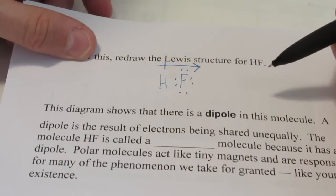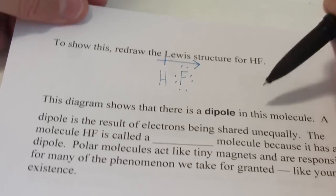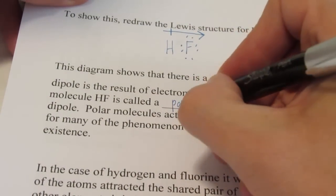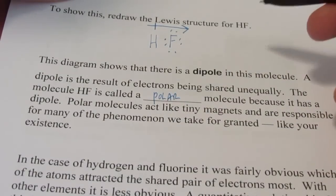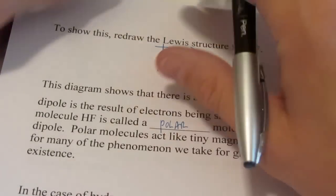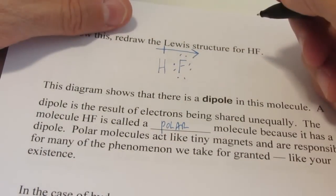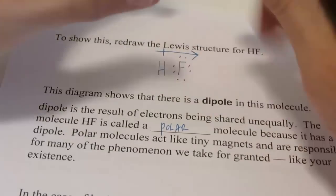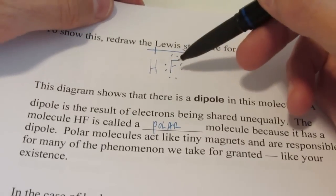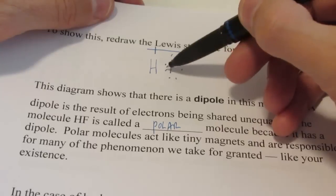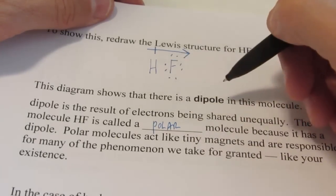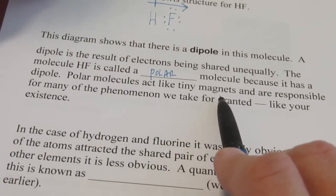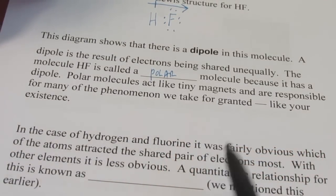We call this a dipole. In fact, this diagram shows that there's a dipole in the molecule. A dipole is the result of electrons being shared unequally. The molecule HF is called a polar molecule because it has one of those dipoles. If those electron pairs were being shared equally, it would be non-polar because no dipole would exist. That might be in my Barbie doll dream house analogy, maybe two identical twins get to share a Barbie doll dream house. In that situation, we would expect more equal sharing. However, in this situation, it turns out that the fluorine atom has a greater electronegativity. It has a greater attraction for that shared pair, so they spend more time around fluorine than they do hydrogen. As a result, we get a dipole. If we have a dipole, the molecule is polar. Polar molecules act like tiny magnets and are responsible for many of the phenomenon we take for granted, like your existence.